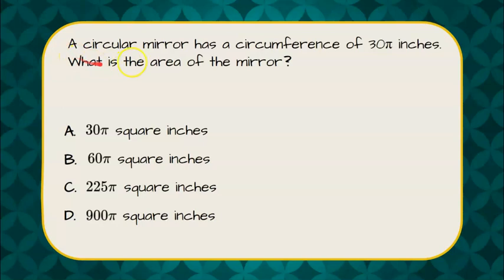Here's our question. A circular mirror has a circumference of 30 pi inches. What is the area of the mirror? And we have four multiple choice answers.